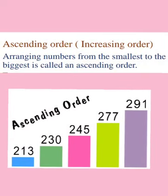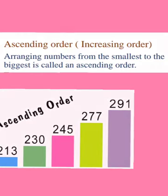Ascending order means arranging numbers from the smallest to the biggest number. Here is one example: 213 is smaller than 230, 230 is smaller than 245, 245 is smaller than 277, and 277 is smaller than 291. So these numbers are arranged in ascending order — that is, from the smallest to the biggest.